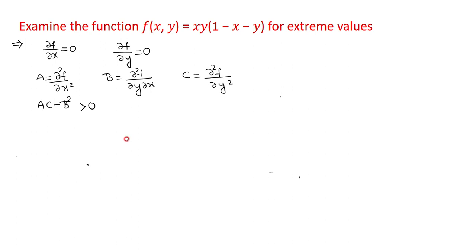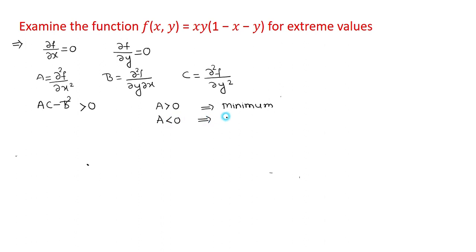To summarize the procedure: the necessary condition requires ∂f/∂x = 0 and ∂f/∂y = 0. Find the critical points satisfying these. Then find the second-order derivatives A, B, and C at those critical points. If ac - b² > 0 and a > 0, the function has a minimum; if a < 0, the function has a maximum.